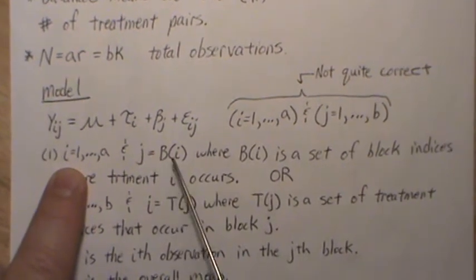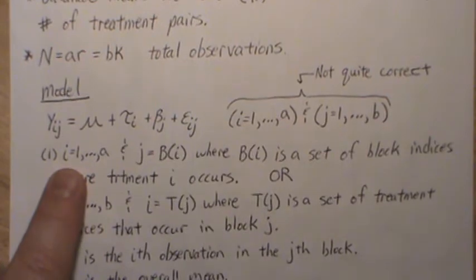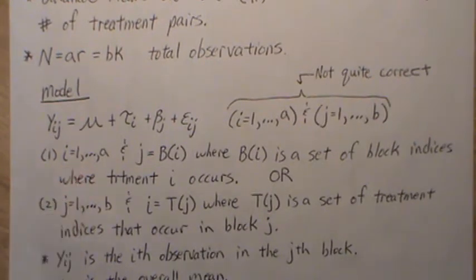For instance, I equals one, J equals B(i), and B(i) is the set—say one, two, four—because treatment one doesn't occur in block three; it occurs in one, two, and four.